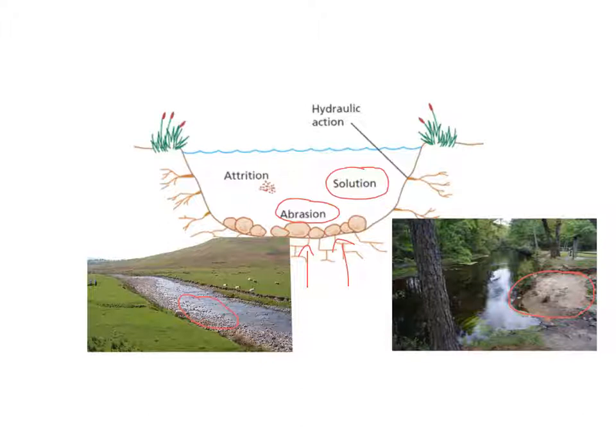The final process of erosion is attrition. This isn't about erosion of the bed or banks, but rather the bed load within the river - whether boulders, pebbles, or particles carried by the water. The process of water flowing over these particles causes them to collide with each other.